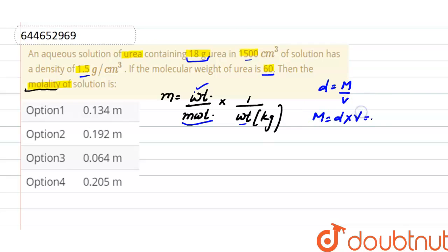And density here is 1.5 and volume is 1500. So from here, this mass is in grams, that is 1.5 into 1500 grams. Putting the values in the given formula, molality is